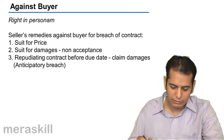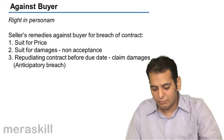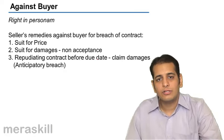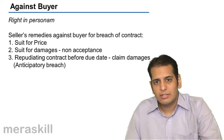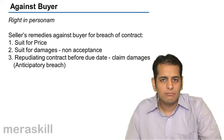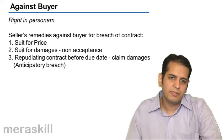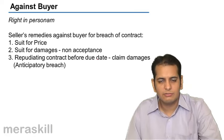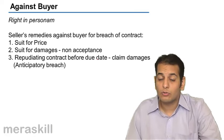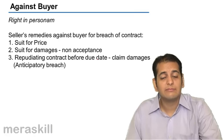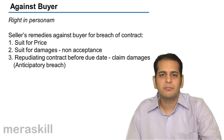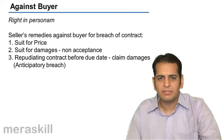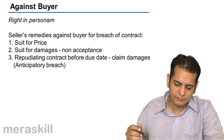Third, repudiating the contract before the due date. For example, if the seller had given the buyer one month's credit period, and on the 10th day itself the buyer tells the seller that he is not going to pay the price, this will be an anticipatory breach. For anticipatory breach, the seller can also claim damages for whatever losses he might incur.